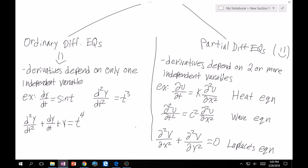Another one is the second derivative of y with respect to t equals t cubed. Again, we're only taking derivatives of y with respect to only one variable, t. And finally, t squared d²y/dt² plus dy/dt plus y equals t to the 4. Again, we're just summing derivatives of y only with respect to t.